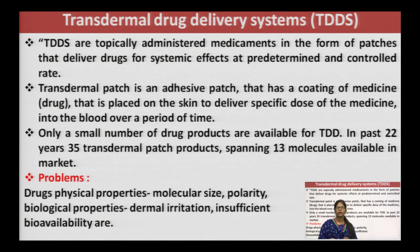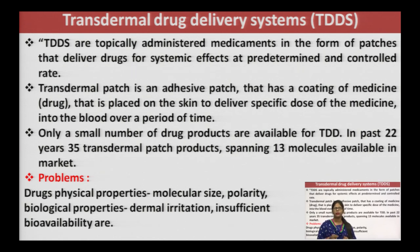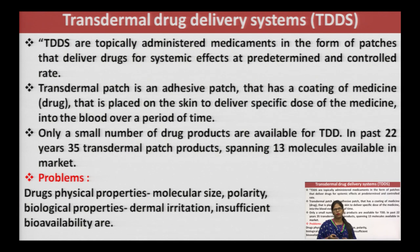There are a lot of advantages in Transdermal Drug Delivery System, but still there is a small number of drug products available in the market. If we look at the literature survey, in the last 22 years there are only 35 transdermal patch products, which have been developed from only 13 molecules. The basic problem is that in TDDS, there are limits due to the drug's physicochemical properties such as molecular size, polarity, biological properties, and sometimes drug causes dermal irritation, and insufficient viability of drug may work as a limiting factor.